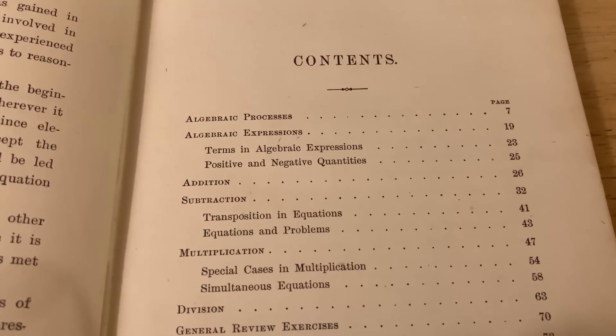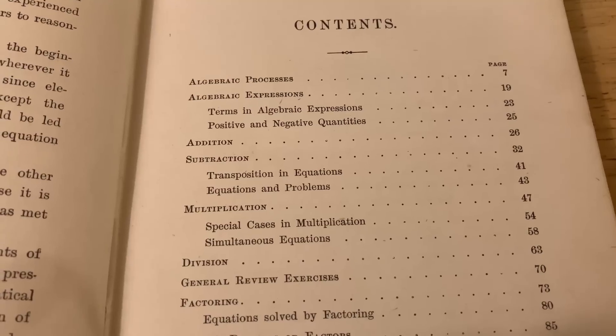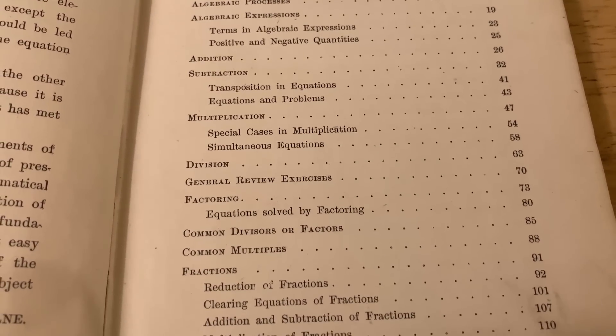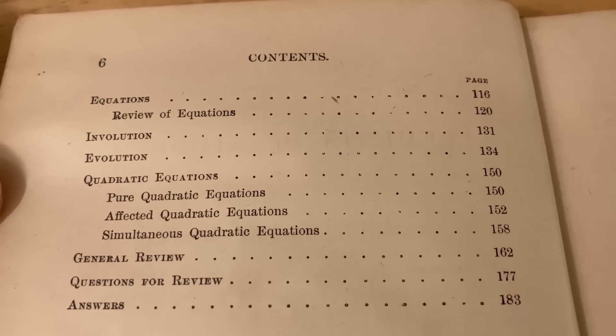Let me show you the contents. So here are the contents of this book. You can see it's really basic. It starts with algebraic processes, algebraic expressions, addition, subtraction, multiplication, division. Really basic stuff. Nothing too complicated. And then here's the second page of the contents. Just more basic math.